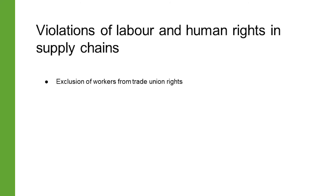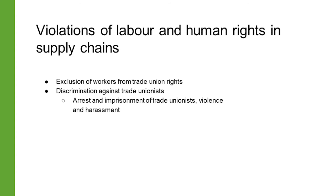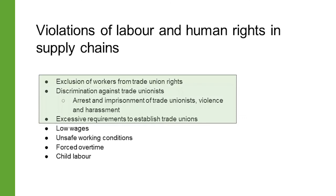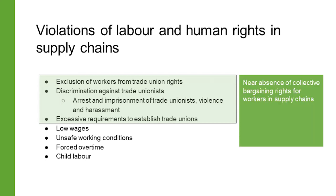Some of the most frequent violations include exclusion of workers from trade union rights — such as the freedom to join and work in trade unions — discrimination against trade unionists, lack of protection for workers who organize, excessive requirements to establish trade unions, arrests and imprisonments of trade unionists, other forms of violence and harassment, low wages, unsafe buildings and working conditions, forced overtime, and child labor. The rights to organize, bargain collectively and strike are curtailed or completely denied in global supply chains. This is a major barrier to decent work.